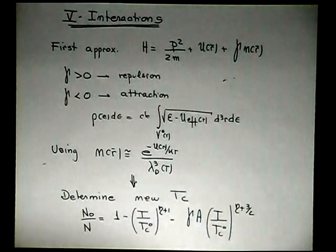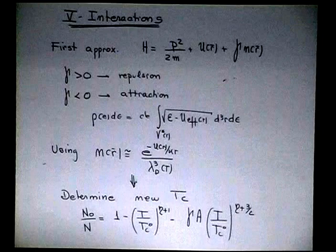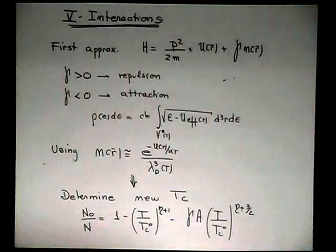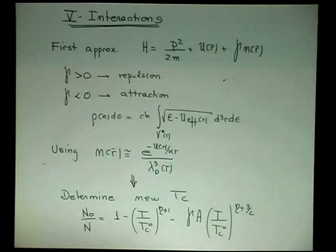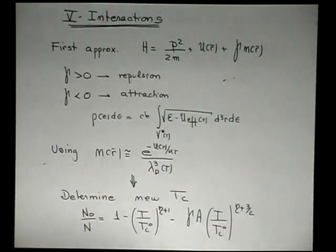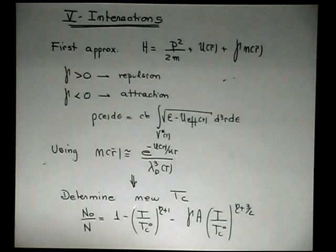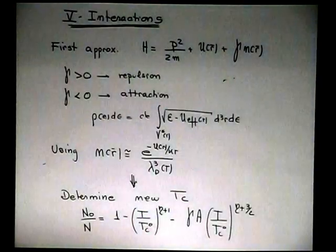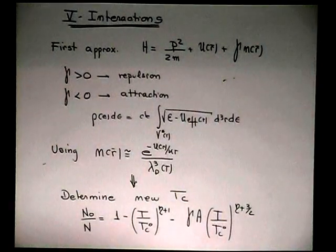If it is repulsive, it's like particles getting far apart. n_0 is equal to zero, and then I have a correction here. So if I make this equal to zero, I can tell you what is the new critical temperature in terms of the ideal system critical temperature.